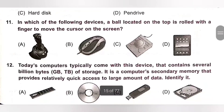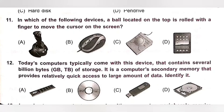Question 11: In which of the following devices is a ball located on the top rolled with a finger to move the cursor on the screen? That is a trackball. A is joystick, B is mouse, D is mobile phone. Option C, trackball, is the correct answer — it has a ball located on the top that is rolled with a finger to move the cursor on the screen.